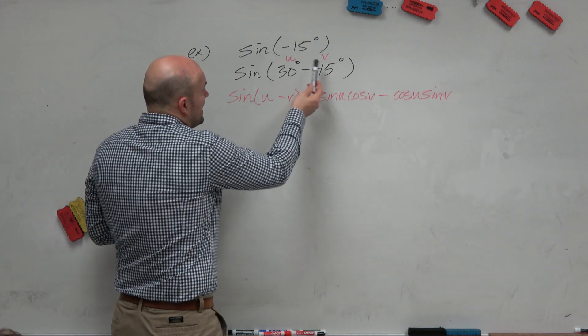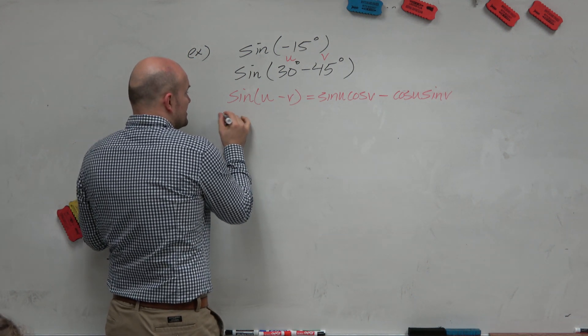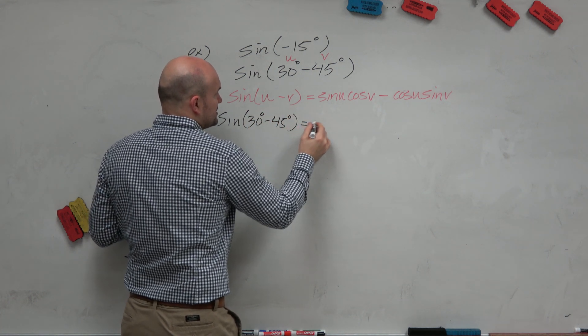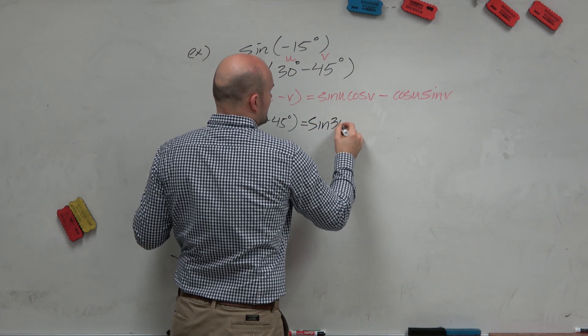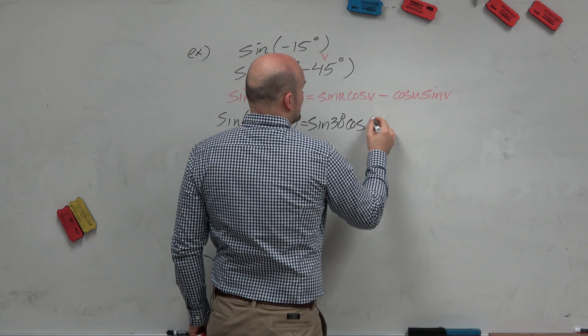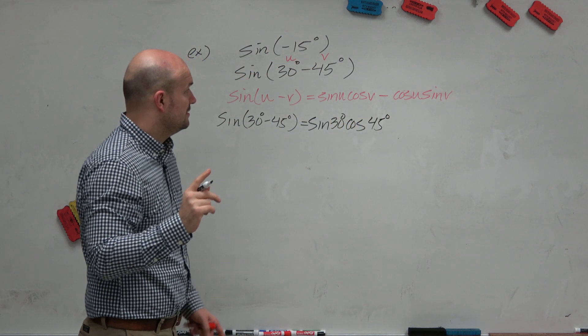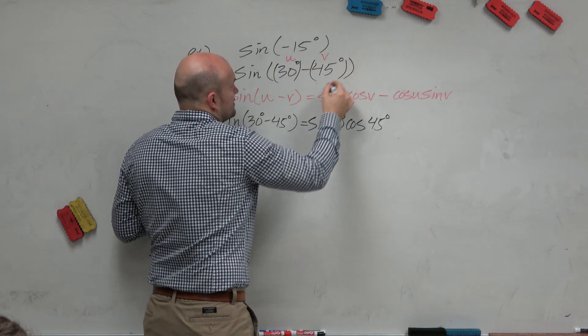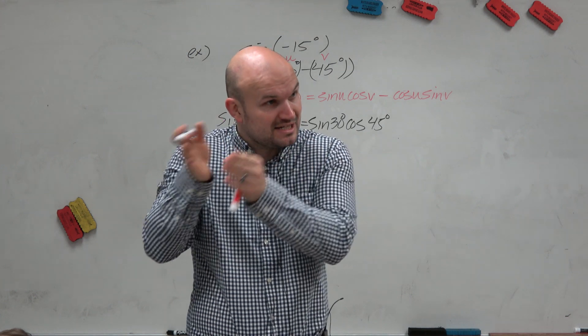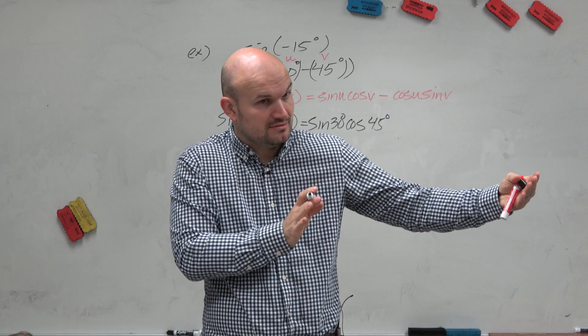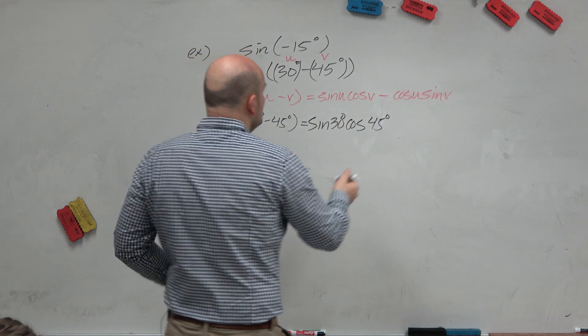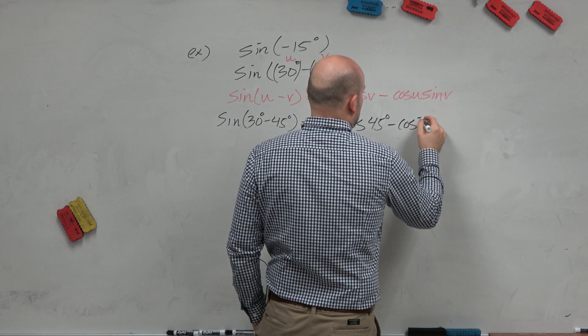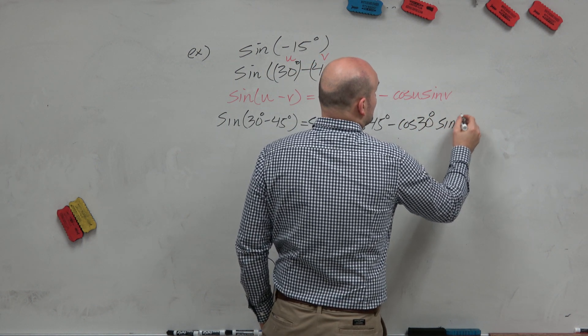Now I have my u and I have my v. Now I'm just really just going to substitute everything in. Again, you don't need to show this step, I'm just doing it so you guys can kind of see. But we're just going to do sine of 30 degrees times the cosine of 45 degrees. Now be careful, it's u minus v. Think of these as in parentheses. So v is not negative, it's u minus v. So you use that formula. So that's cosine of 45 degrees minus cosine of 30 degrees times the sine of 45 degrees.